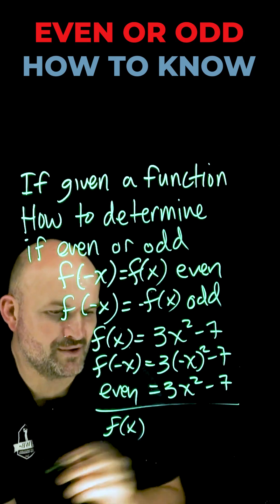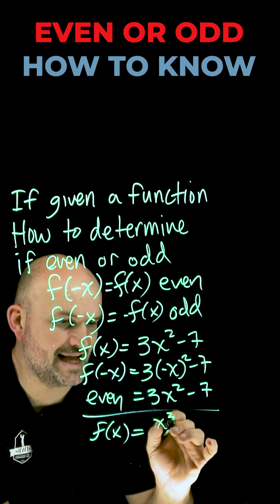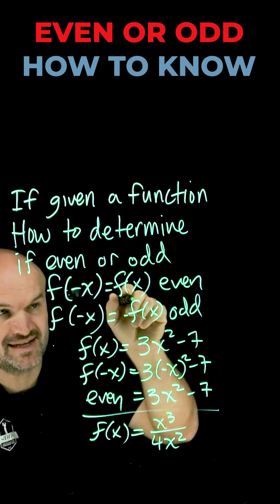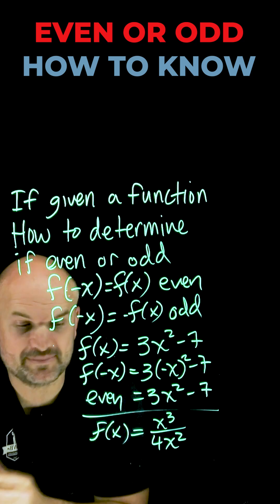I'll still use f(x). So I have f(x) in this case equals x³ divided by 4x². Again, all we simply want to do is plug in negative x and see if we can rewrite it as the opposite of that function.